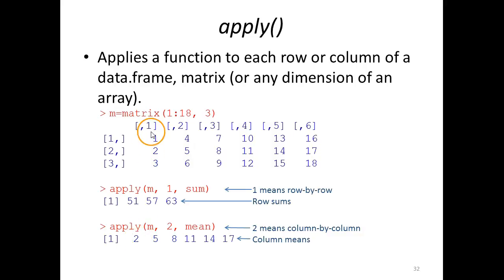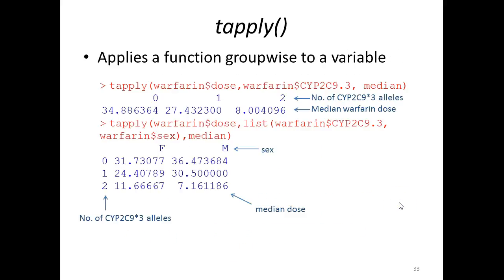tapply is short for table apply, and it's useful when you want to apply a function group-wise to a variable - that is, when your data set can be grouped according to one variable and you want to perform something to another variable for each of these groups.